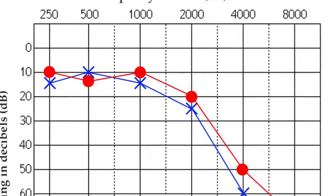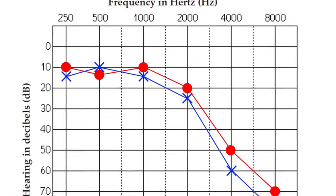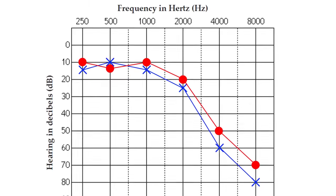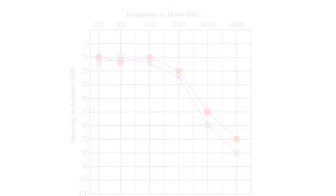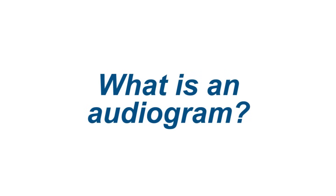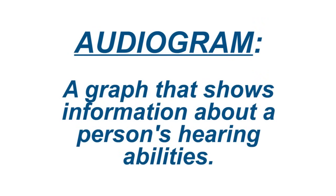How to read an audiogram: Reading an audiogram can seem pretty complex, but once you know the basics it's really pretty simple. First of all, you may be wondering what is an audiogram? An audiogram is a graph that shows information about a person's hearing abilities.